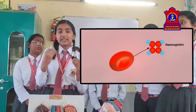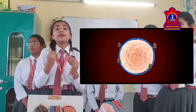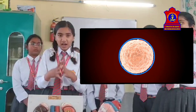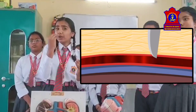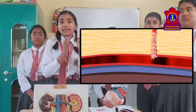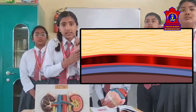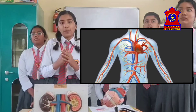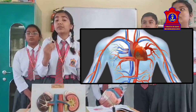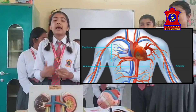The blood also has WBC, known as white blood cells, which fight against the germs that may enter our body. Now, have you ever noticed that whenever bleeding stops, a dark red clot is formed? It is formed because of the presence of another type of cell in the blood called platelets.